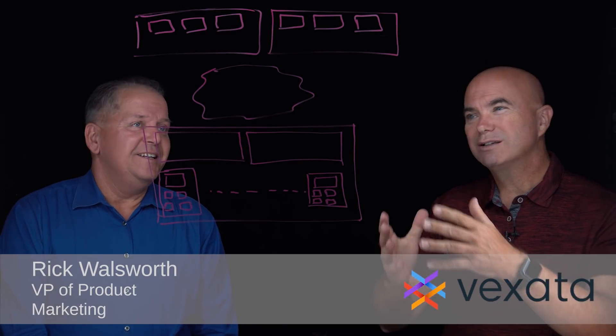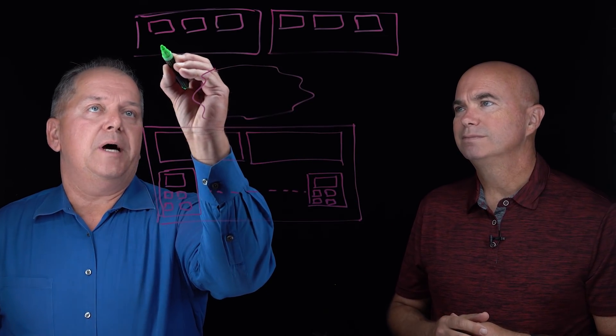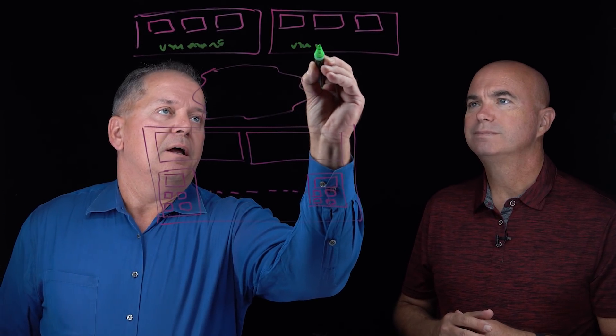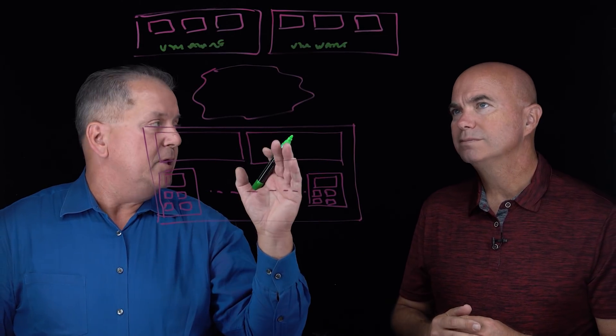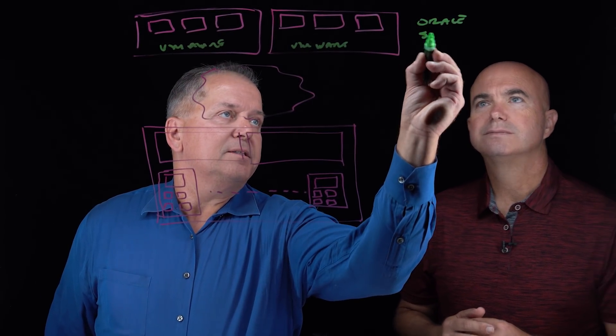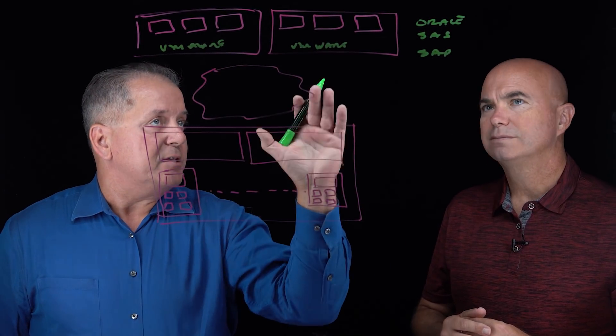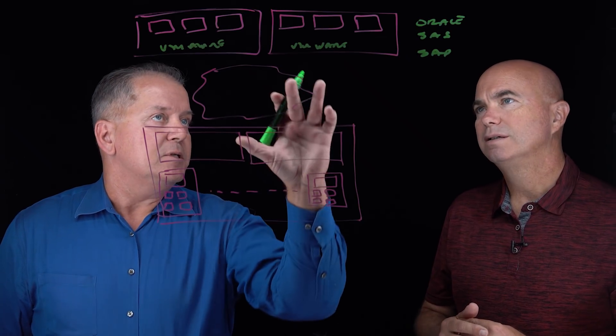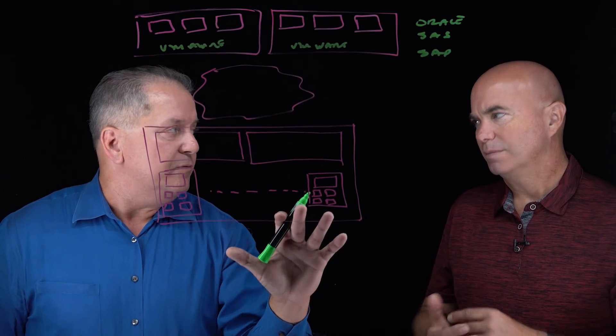Yeah, thank you. So what we're looking at here is typical hypervisors where I've got VMware running out across here, and I'm running VMs out across here. And exactly as you said, what you're seeing now is we're seeing a lot more of the Oracle, SAS, SAP databases actually now running within virtual machines because you can take advantage of that compute power. But what happens is as I start to virtualize more of these applications, it starts to put more pressure on the underlying storage infrastructure.